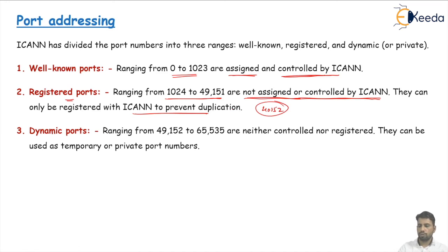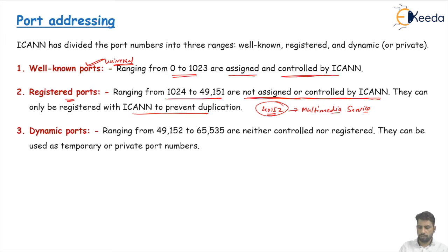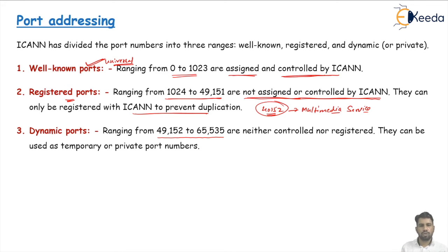For example, if port 40150 is registered by your organization for some multimedia services, ICANN will give that registration to your organization and no one else can register it. Well-known ports are for universal communications — services that are very important for communication between source and destination computers. Dynamic or private port numbers range from 49152 to 65535. They are not controlled or registered by ICANN. Anyone can use them for research, local host, or remote host purposes. They are temporary or private port numbers you can use for your own service without any registration.